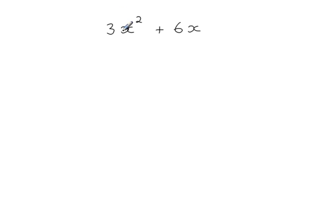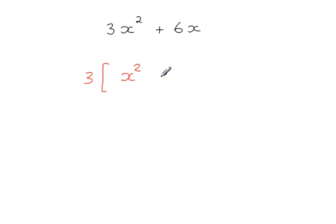In that initial step, we do some factorizing. I'm going to take the 3 and put it outside the brackets. So inside I have x squared, because 3 times x squared gives 3x squared, and 3 times 2x gives 6x.